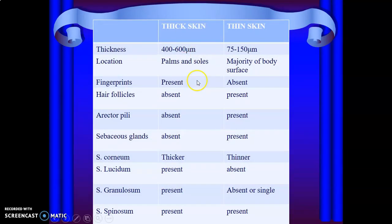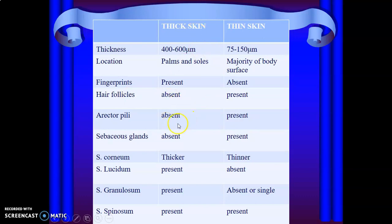We can ask you to tabulate the differences between thick skin and thin skin. Thick skin is found in the palms and soles; thin skin covers the majority of the body surface. Thick skin has fingerprints. Thick skin lacks hair follicles, erector pili, and sebaceous glands, but thin skin has all of these. Stratum corneum is thick in thick skin; stratum lucidum is present only in thick skin. Stratum granulosum may be absent or a single layer in thin skin. Stratum spinosum is present in both.